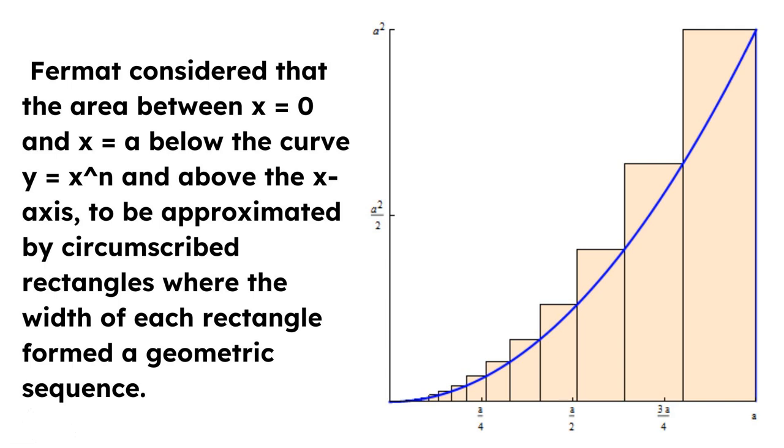Fermat considered that the area between x equals 0 and x equals a below the curve y equals x to the power of n and above the x-axis, to be approximated by circumscribed rectangles, where the width of each rectangle formed a geometric sequence.